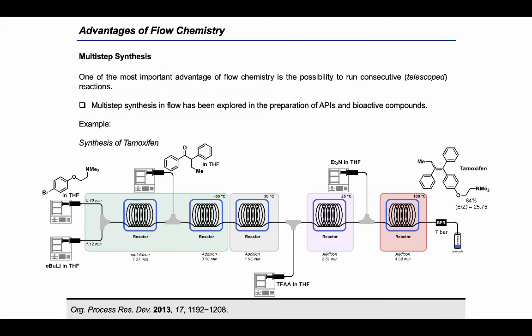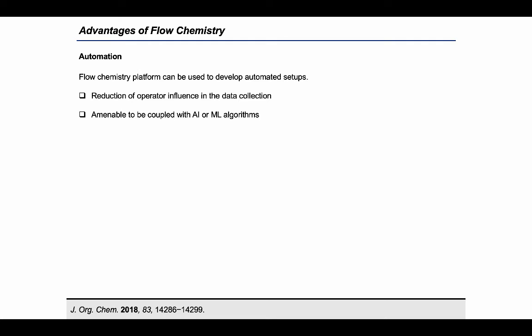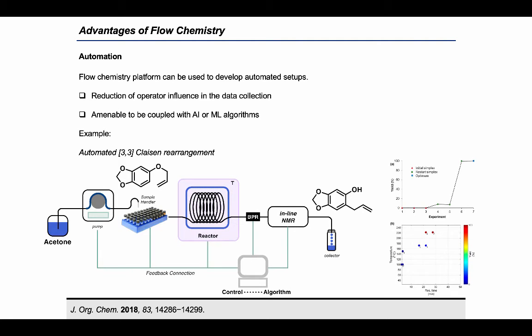The small dimensions, direct reaction analysis, and operator-free nature of flow microreactor technology are perfect characteristics to create automated platforms that can be coupled with artificial intelligence or machine learning algorithms. For example, in this literature report is shown a computer-controlled platform where a 3,3-Claisen rearrangement reaction was self-optimized thanks to in-line NMR analysis and feedback loop.